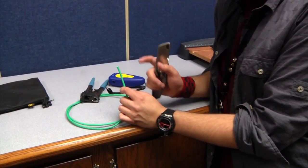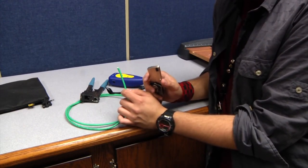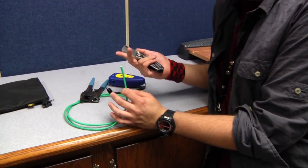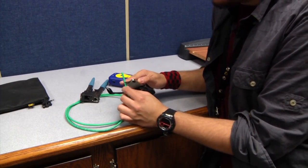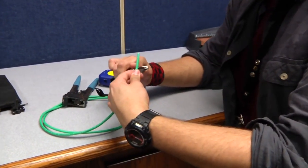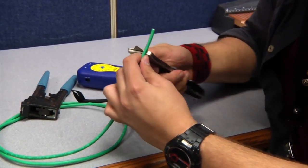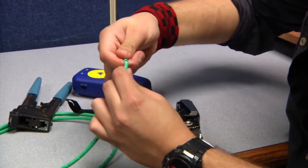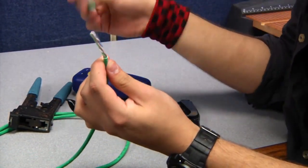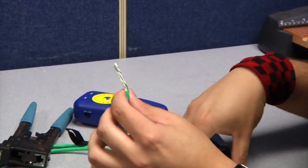The first thing you're going to do is get the sheathing off. To get the sheathing off, you can use snips or whatever. I like to use a knife because it's nice and clean and simple. Just run it around here and pull it off.